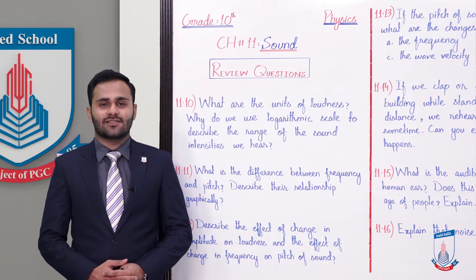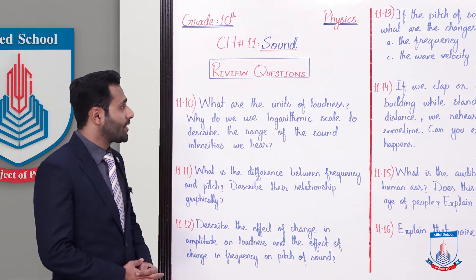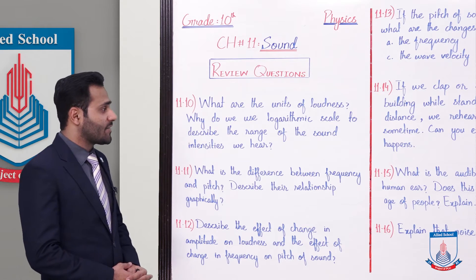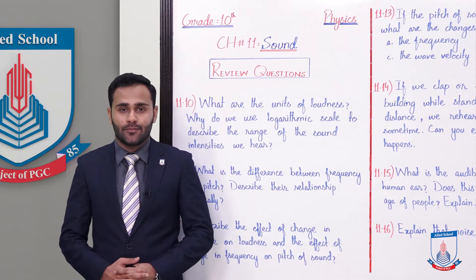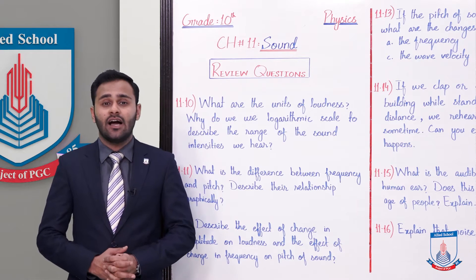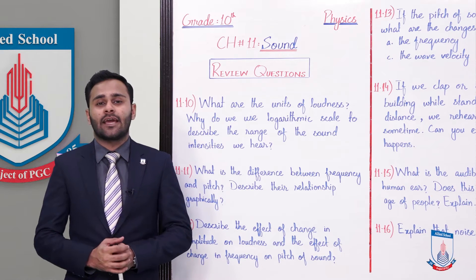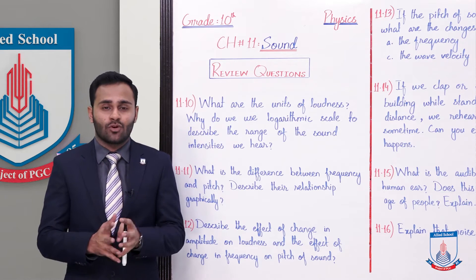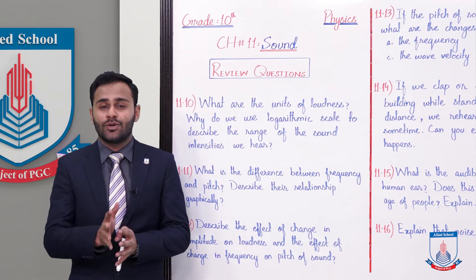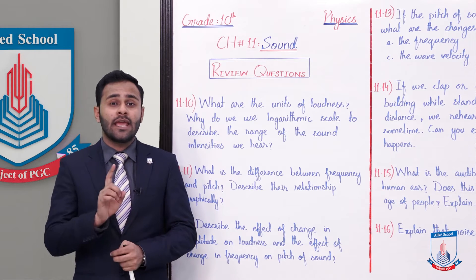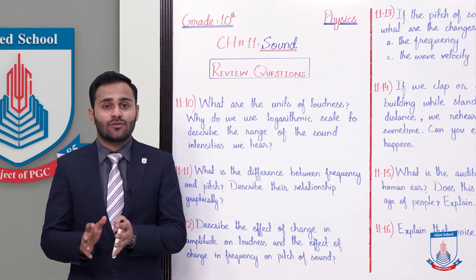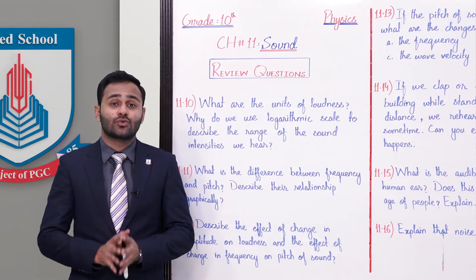Chapter number 11 Sound. Exercise review question 11.10: What are the units of loudness and why do we use logarithmic scale to describe the range of sound intensities we hear? So first part: what are the units of loudness? Loudness ka unit kya hai - loudness ko normally hum measure karte hain in terms of intensity of the sound or sound level. So intensity or sound level ka unit hota hai bell, aur ek bell jo hai wo 10 decibel ke equal hota hai, because bell is a very large unit aur decibel jo hai wo small unit hota hai. So one bell is equal to 10 decibels.